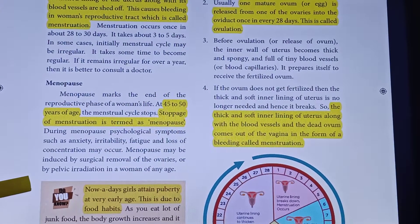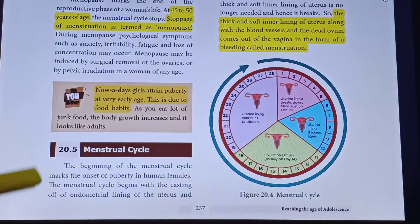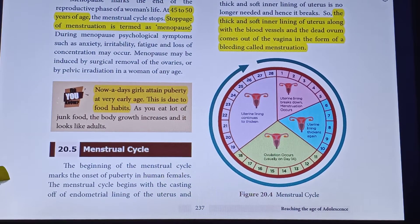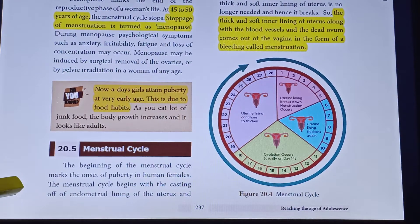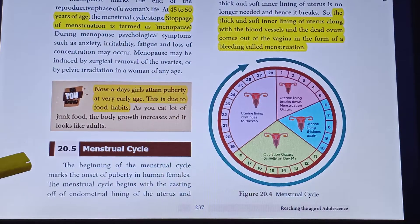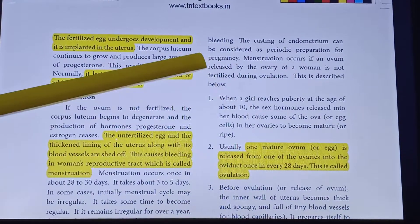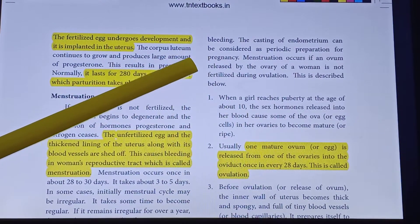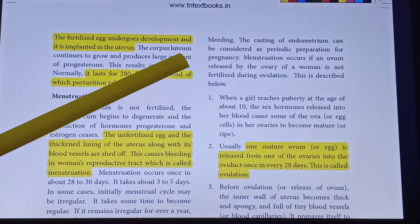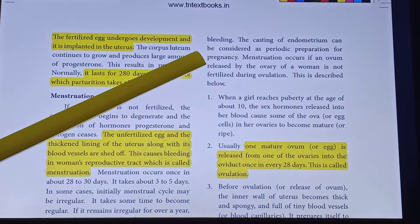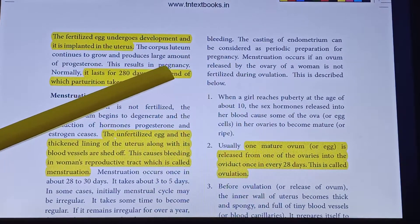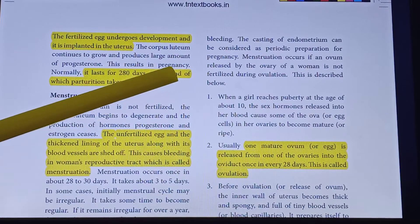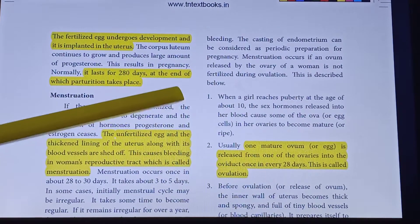Nowadays girls attain puberty at a very early age, due to food habits. The beginning of the menstrual cycle marks the onset of puberty in human females. The menstrual cycle begins with the shedding of the endometrium lining of the uterus and bleeding. The shedding of endometrium can be considered as a periodical preparation for pregnancy. The menstrual cycle occurs if an ovum released by the ovary is not fertilized during ovulation.